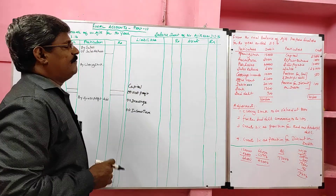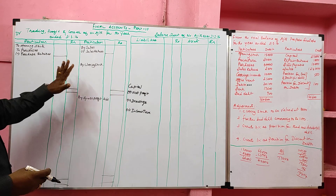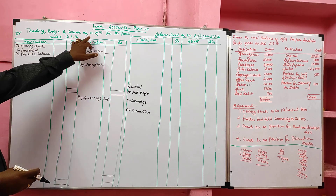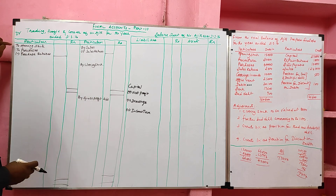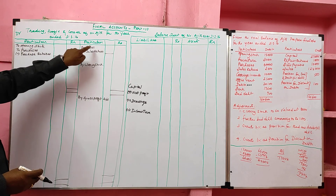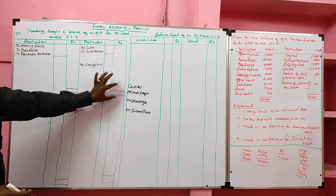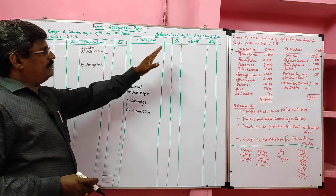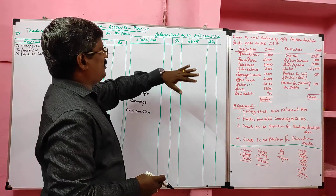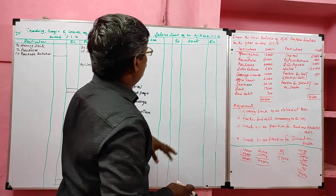Now I am going to solve. Before solving the problem, first we have to draw the format. Trading profit and loss account of Mr. Ajit for the year ended 31st March 2016. Debit side: opening stock, purchases minus purchase return. Credit side: sales minus sales return, closing stock. Then the trading account balancing line for gross profit. Profit and loss account balancing line. Then I drawn the format of the balance sheet — balance sheet of Mr. Ajit as on 31-3-2016.